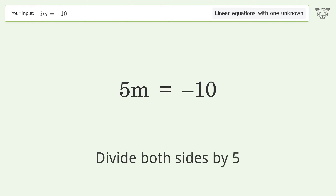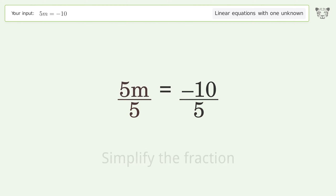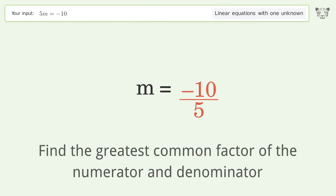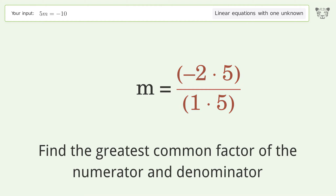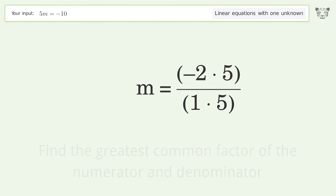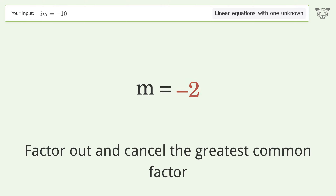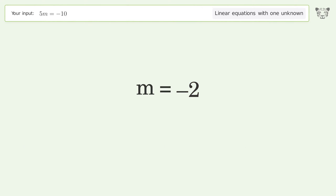Divide both sides by 5 and simplify the fraction. Find the greatest common factor of the numerator and denominator, then factor out and cancel the greatest common factor. And so the final result is m equals negative 2.